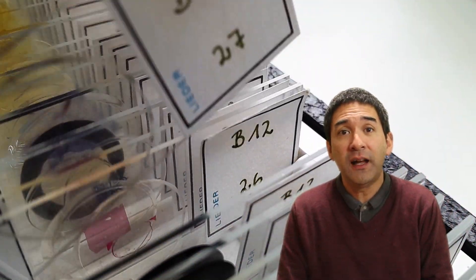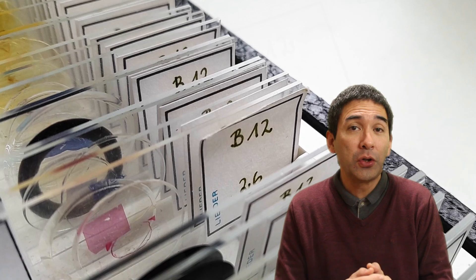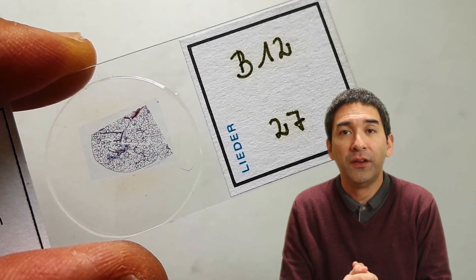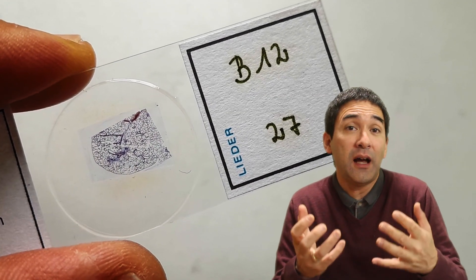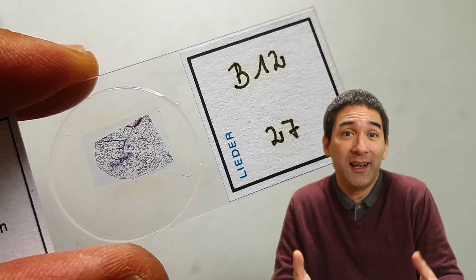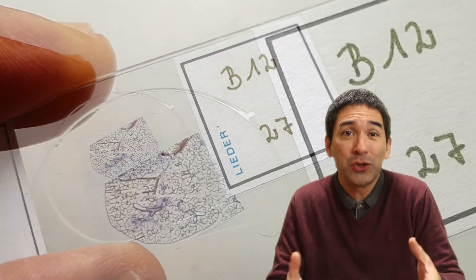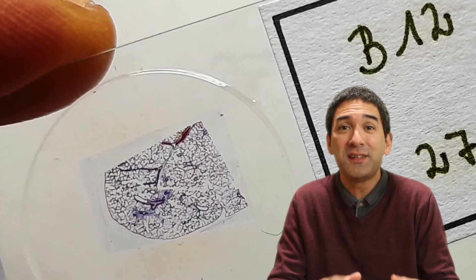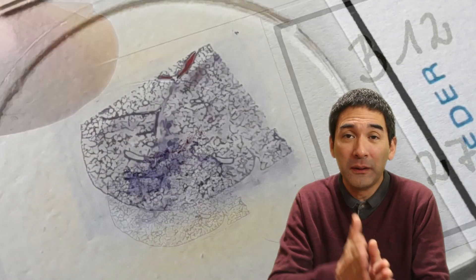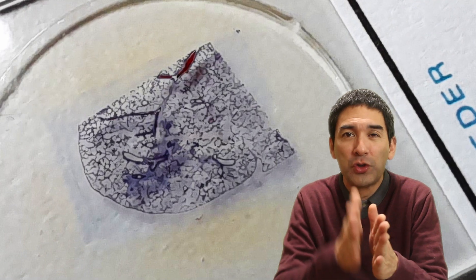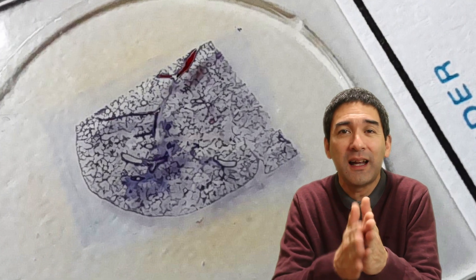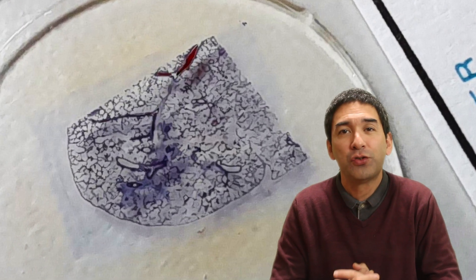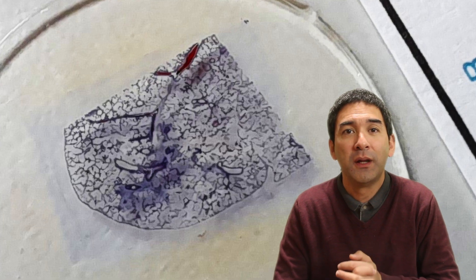This is the microscope slide we'll be looking at — it contains a thin cross section of a healthy lung. I did not make the slide; it's a commercially prepared microscope slide, so it's been properly stained and properly microtomed, which basically means sliced into very thin sections so that you're able to see all the structures very well.